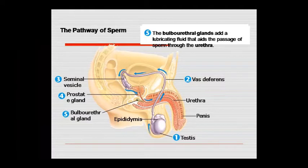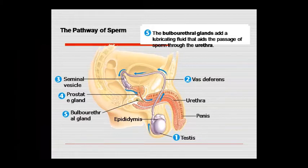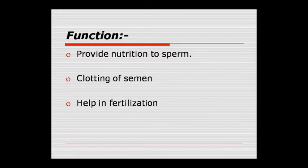You can see the sperm pathway in the diagram. The ejaculatory duct passes through the prostate gland. The bulbo-urethral gland adds lubricating fluid to the sperm passage in the urethra.